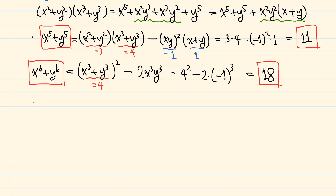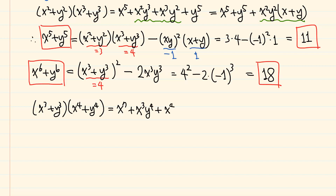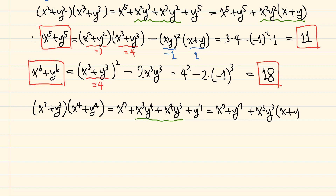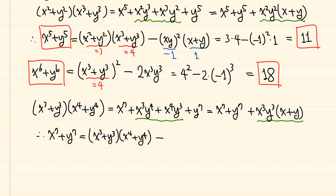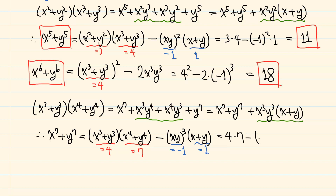For the power of 7, we use the expansion of x cubed plus y cubed times x to the power of 4 plus y to the power of 4, which gives x to the power of 7 plus x cubed y to the power of 4 plus x to the power of 4 times y cubed plus y to the power of 7. The middle part can be written as x cubed y cubed times x plus y. Therefore, x to the power of 7 plus y to the power of 7 equals that product minus xy cubed times x plus y. Using previously obtained values, we have 4 times 7 minus minus 1 cubed times 1, so we have 29.